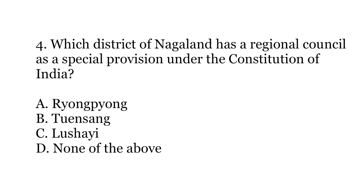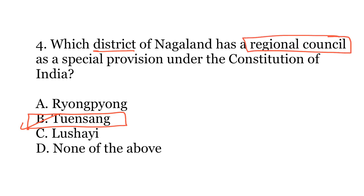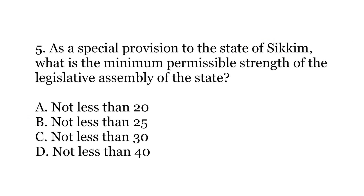Fourth question: Which district of Nagaland has a regional council as a special provision under the Constitution of India? Options: A) Ryongpyeong, B) Tuensang, C) Lushai, or D) None of the above. The correct answer is B) Tuensang. Under Part 21 of the Constitution, the Tuensang district of Nagaland has been granted a unique special provision — a regional council with powers akin to a state legislative assembly, allowing it to make laws on tribal practices of that area.